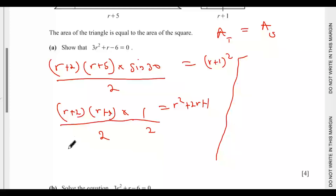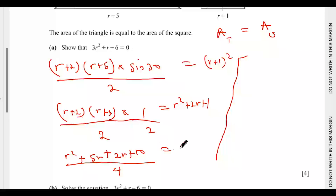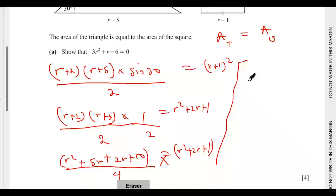Expanding (r + 2)(r + 5): r times r is r², plus 5r plus 2r plus 10, all over four. That equals r² + 2r + 1. Combining like terms on the left: r² + 7r + 10 over four.